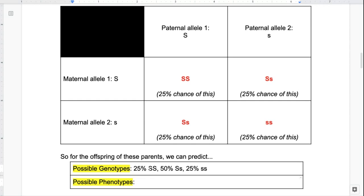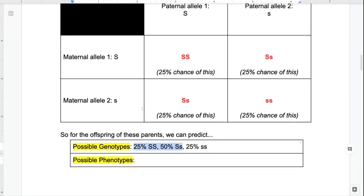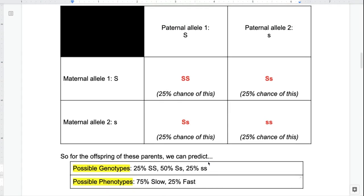Those are my genotypes, but phenotype means the physical trait your offspring actually have. Because big S is dominant to little s, in both the homozygous dominant and heterozygous cases I'll see that big S allele expressed — meaning the slow phenotype. So 75% of my offspring have the slow phenotype, which leaves 25% who inherit the fast phenotype. To be totally clear, this does not guarantee that if these parents had four offspring, three would be slow and one fast. A Punnett square tells us the probability or the chance of having offspring with each genotype and phenotype.